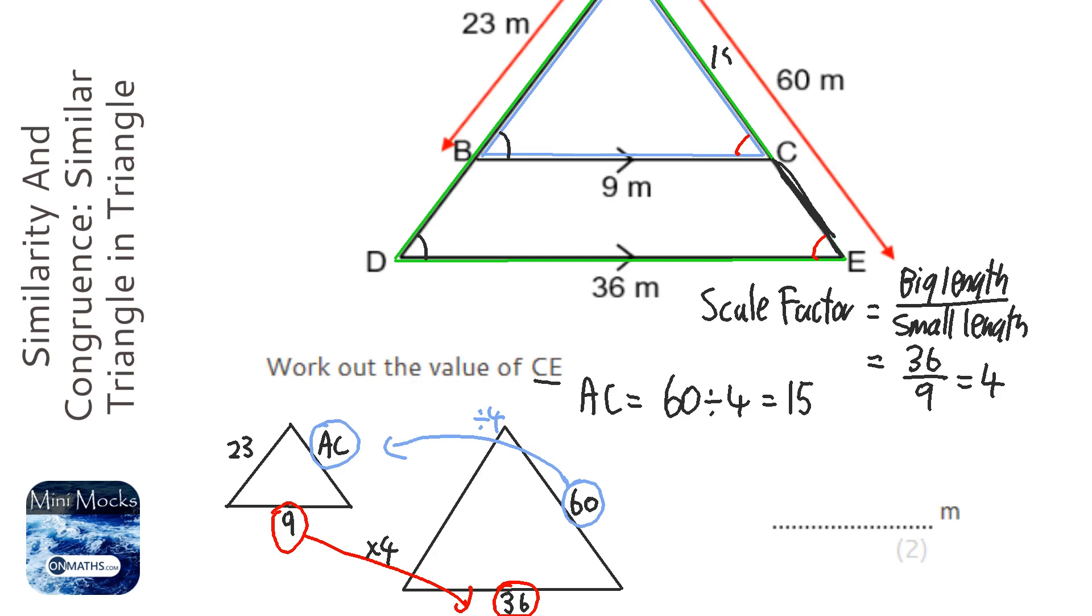But the total is 60, and we're looking for what's left over. So we're going to do CE equals the total 60 take away the bit we know that we don't want. And that's going to be 45. So the answer is 45.